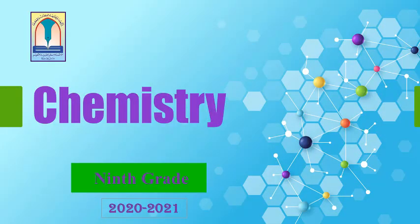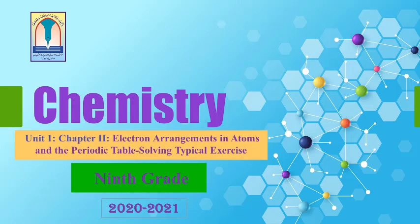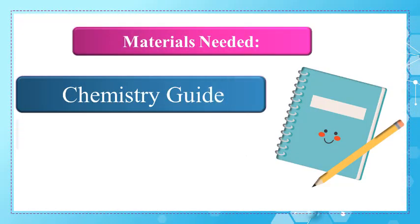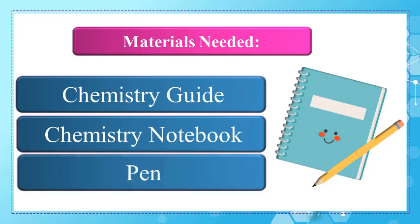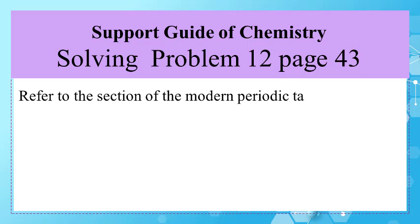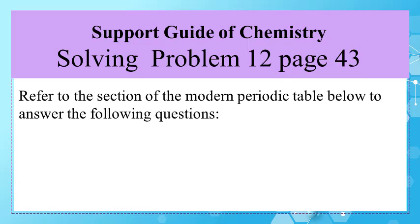Welcome again, Grade 9 students, to a new chemistry session in Chapter 2, entitled 'Electron Arrangements in Atoms and the Periodic Table.' In this session we'll solve together a typical exercise, so bring your chemistry guide, your chemistry notebook, and a pen. Open your chemistry guides on page 43 to solve problem 12, referring to the section of the periodic table below, and answer the following questions.